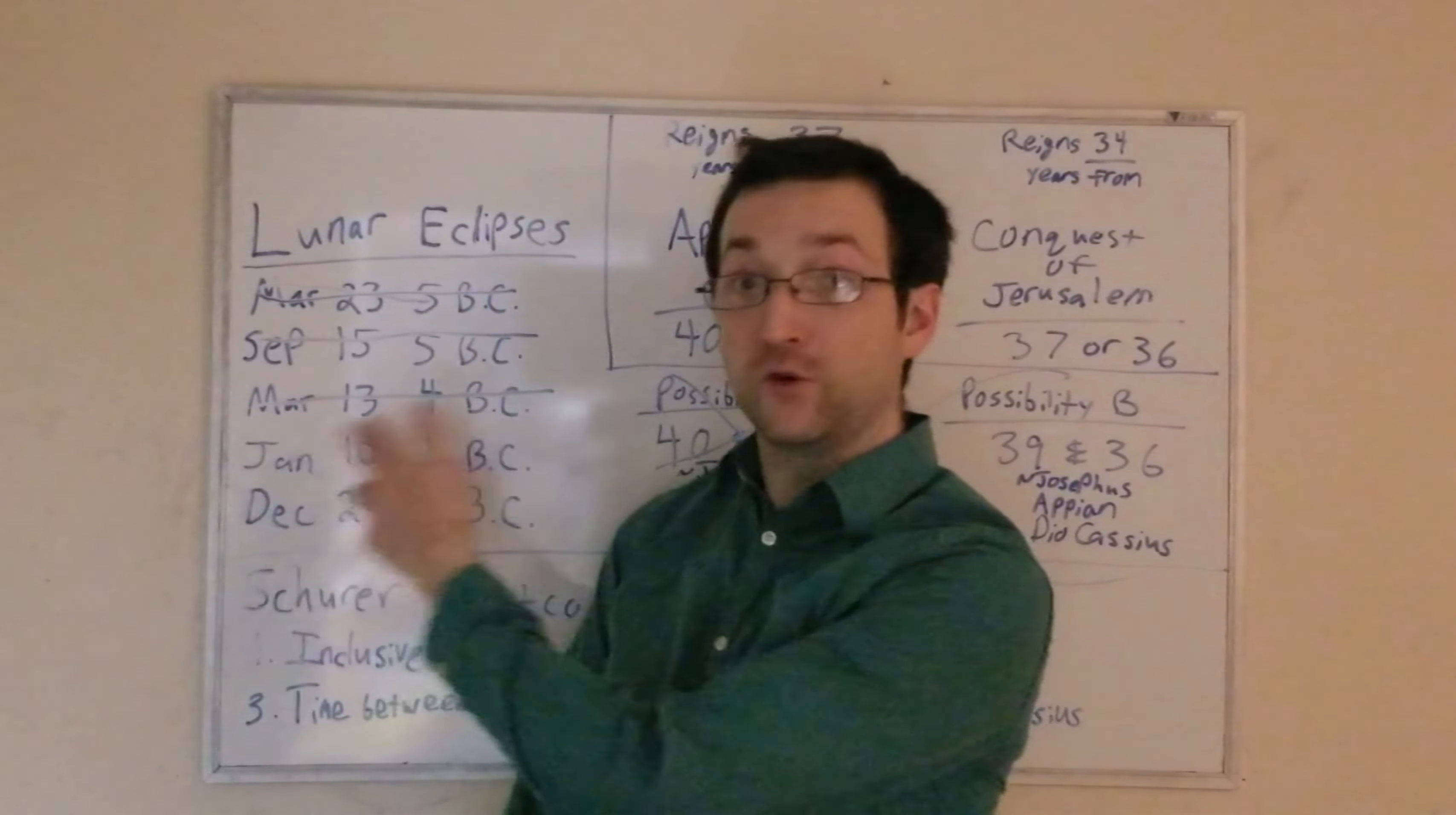Herod dies within a few weeks or months of one of these eclipses, allowing enough time before Passover for everything recorded by Josephus to have taken place. There's no problem making the math work once inclusive reckoning is taken off the table.